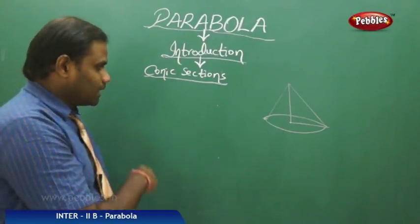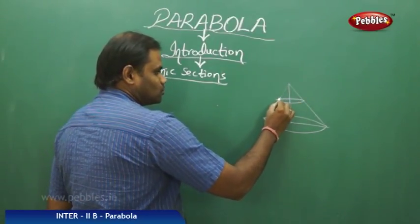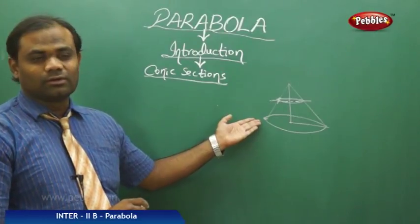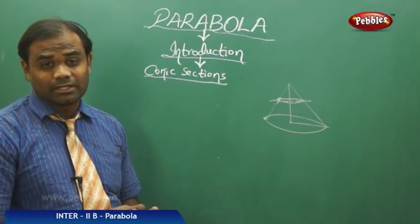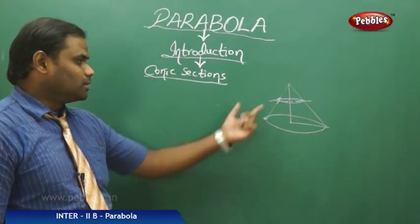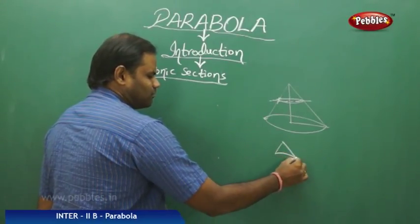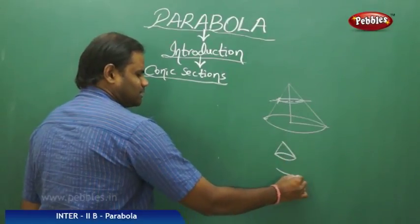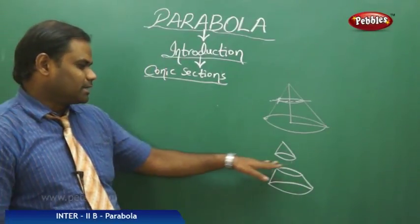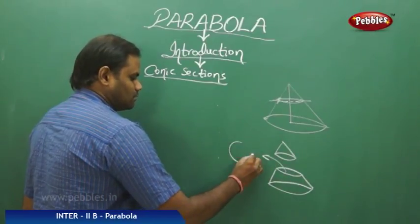Suppose I take this cone and I cut it exactly perpendicular to the base of the cone. If I slice the cone perpendicularly to the base, then I get a circle. When I make this cut, I get a frustum. So cutting exactly perpendicular to the base gives me a circle.